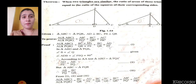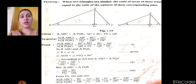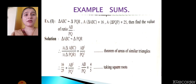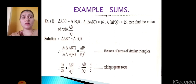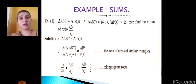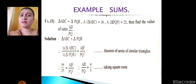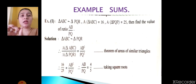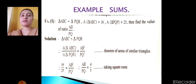I hope you understood this theorem. After solving this theorem, we will go to example sums. Let me see what example sums are given in the textbook. In this type of question, triangles are always given as similar, so the next step will only be to write the theorem name and write the squares.